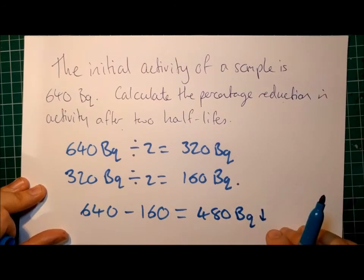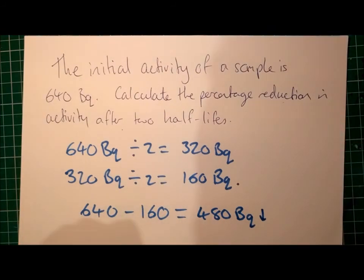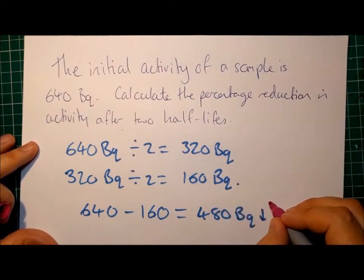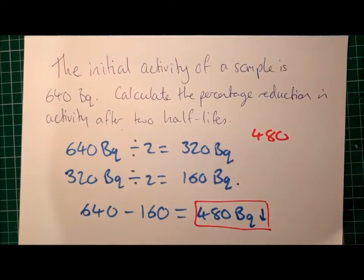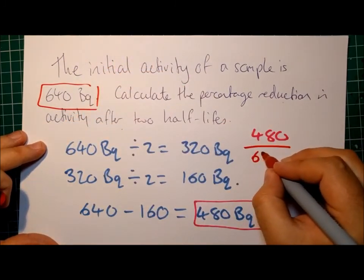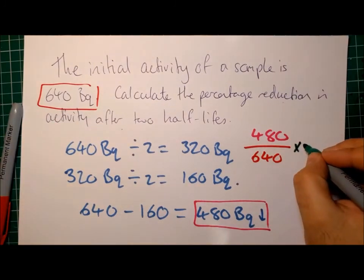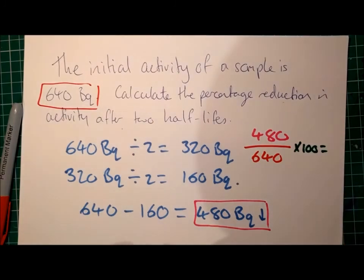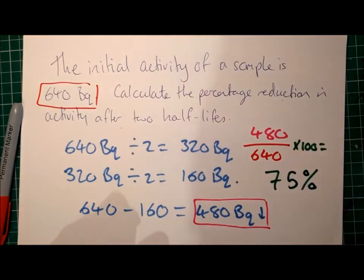That's how much the activity reduced by. And then if I jump over here, I'm going to go to a different colour, because this is starting to look very similar, we take the amount it ended up being reduced by, so 480, and we divide that by the amount that we started at. And then the last bit is simply times that by 100, and it will give us a percentage. In this case, it's going to give us a percentage of 75%. So the count rate was reduced by 75% after two half-lives.